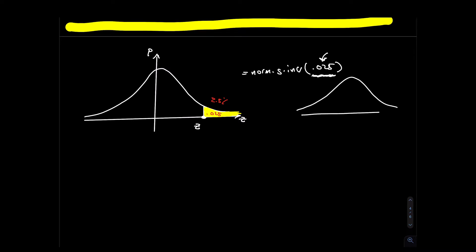If you type 0.025, Excel is going to think you're asking it to find the z-score for the bottom two and a half percent, so it'll give you that value instead of the one you want. Actually, if you understand the symmetry, you'll realize it's the same value — just negative. But when you're just beginning to learn this, I wouldn't rely on that understanding.